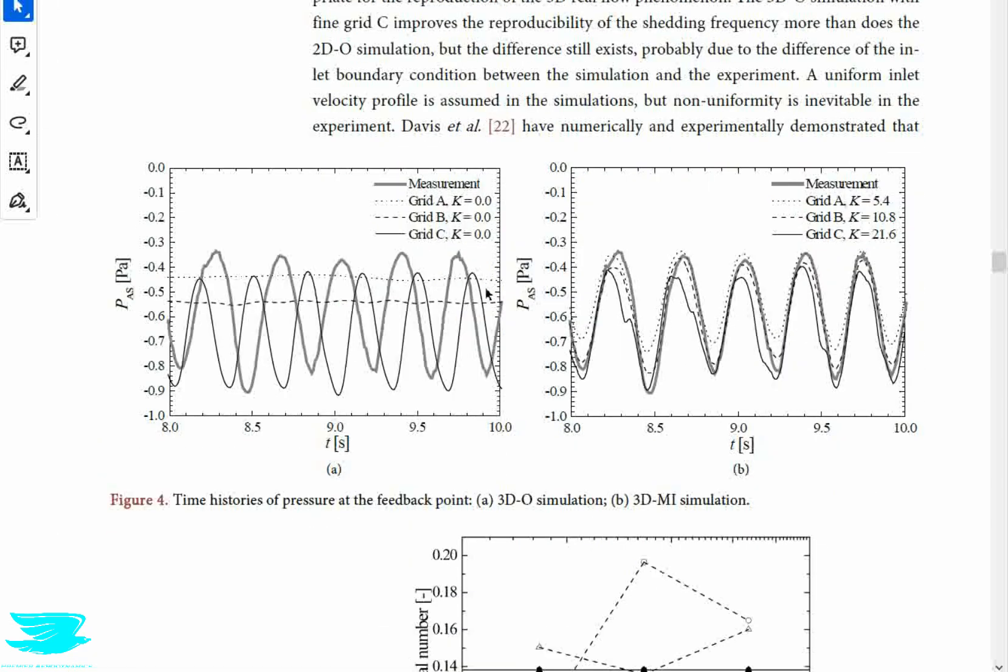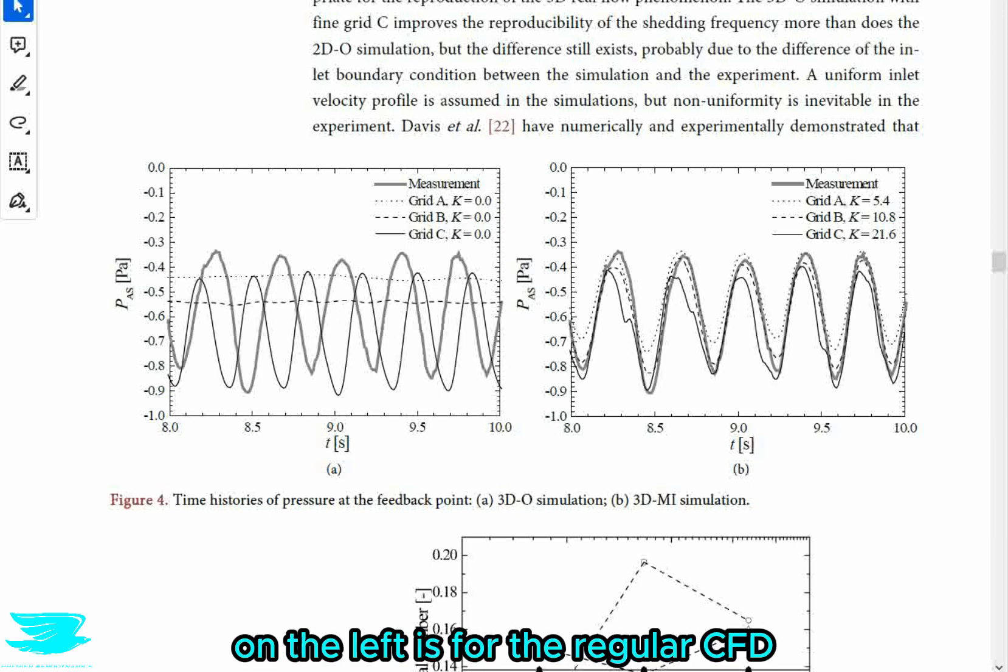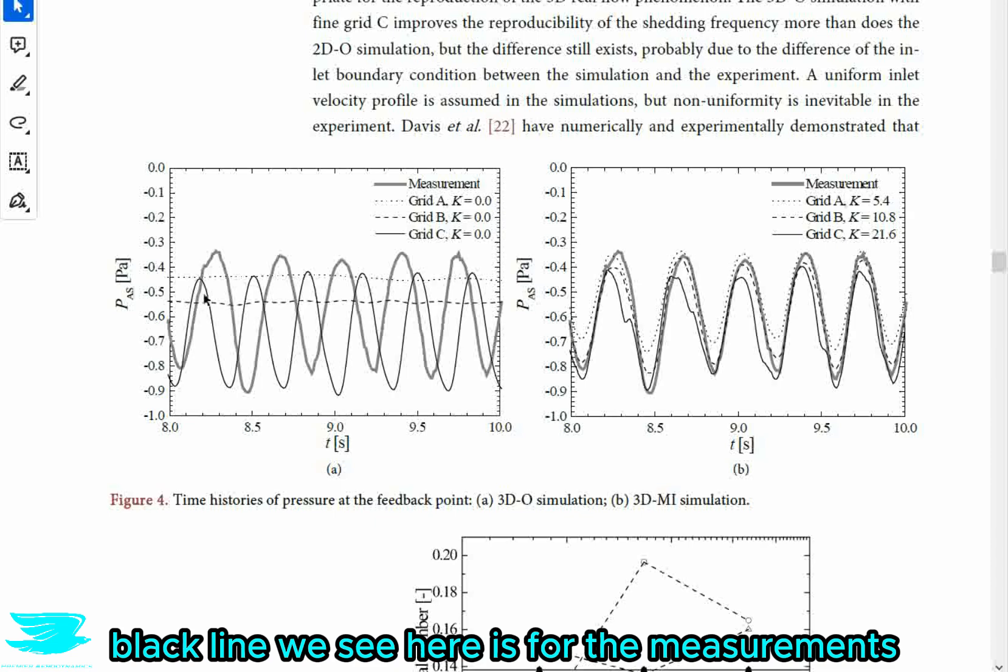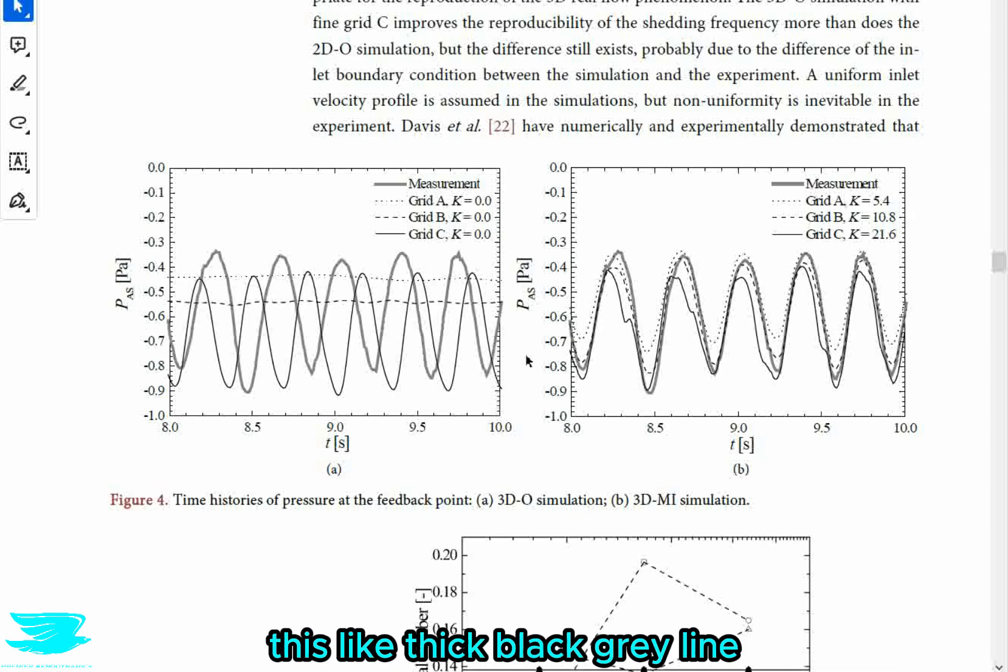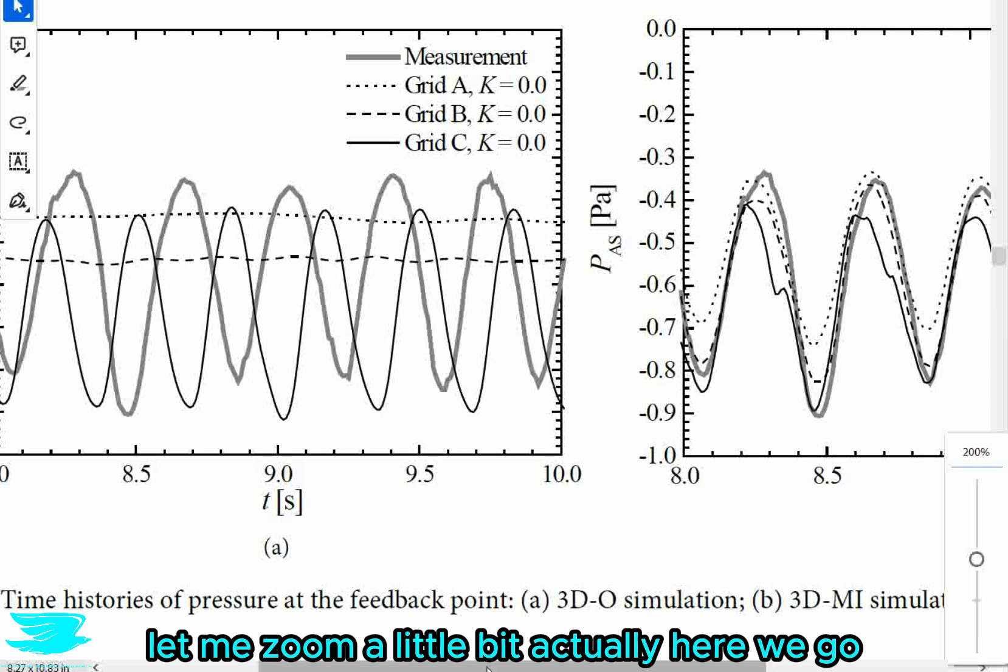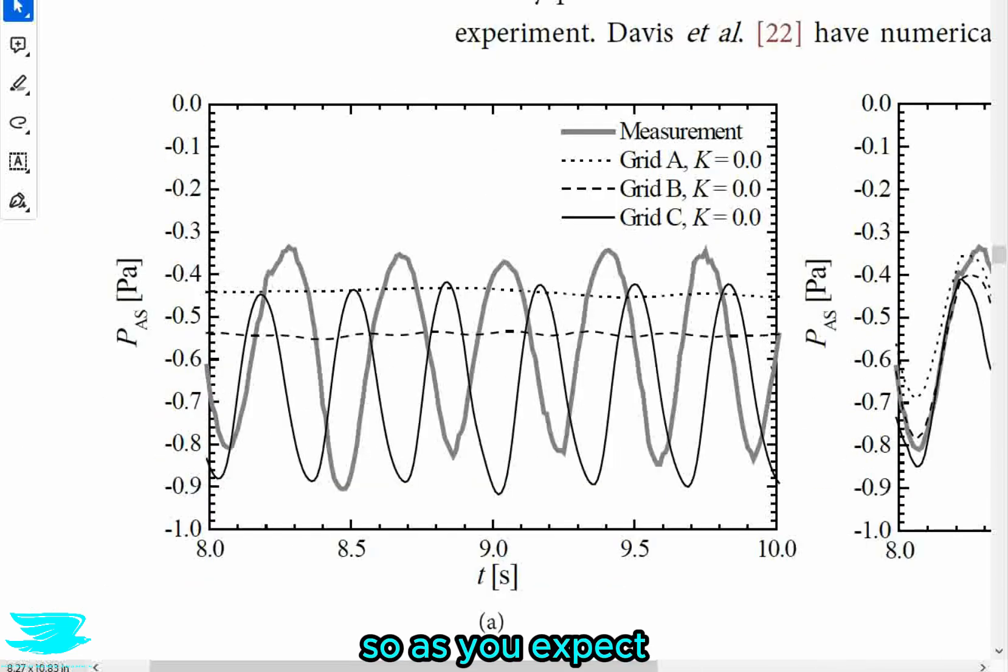So let's jump to the results section now and see how this new CFD method worked. So figure four, we see the pressure at the feedback point in the CFD. On the left is for the regular CFD with no measurement integration. So this is just a regular CFD result. On the right, we see with the measurement integration. Let's focus on the left first. So we see something that actually gives a lot of researchers headaches. And back about 15 years ago, this was a really contentious topic.